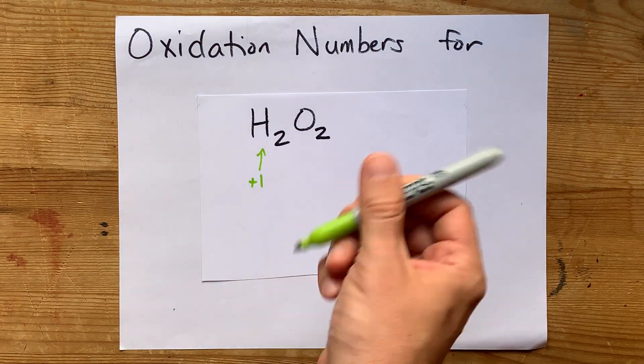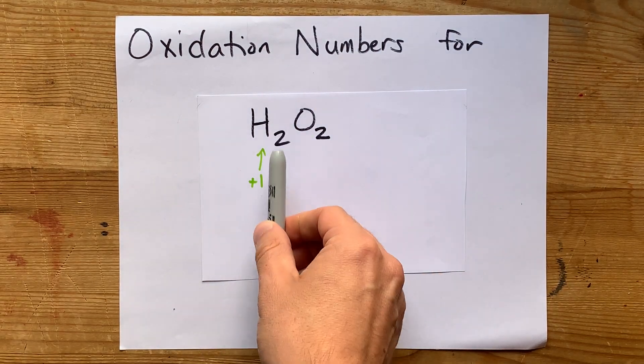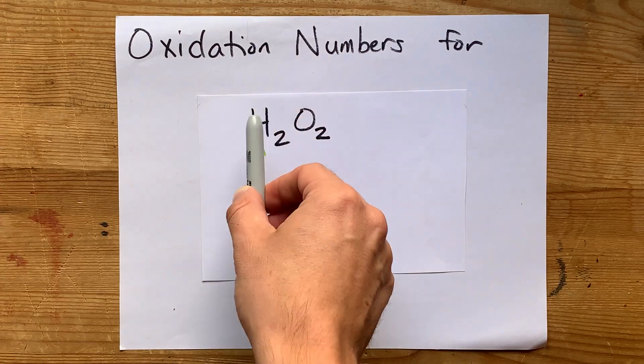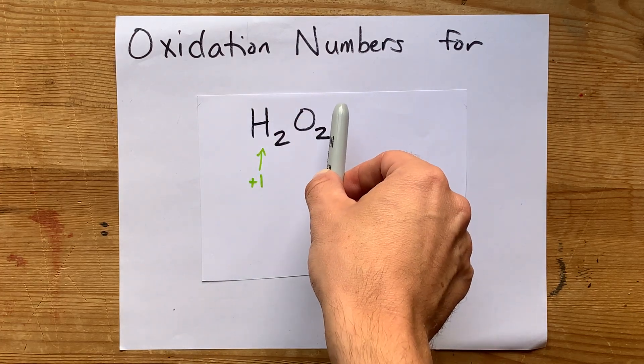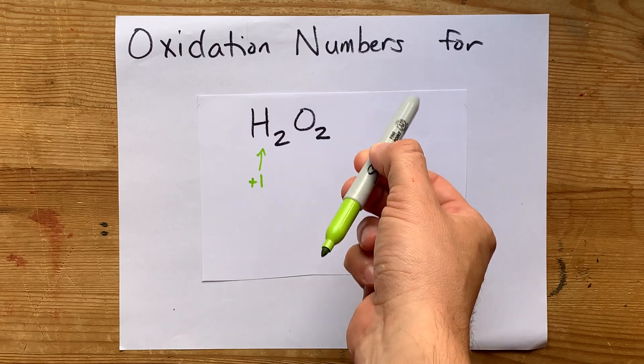What we actually need is for all the oxidation numbers in the compound to add up to the total charge on the molecule, which is zero.